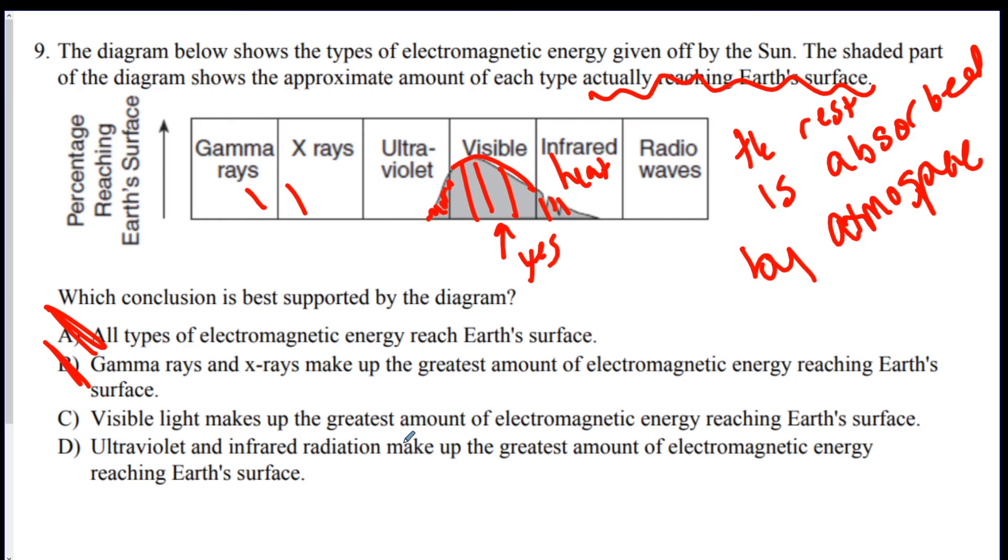Ultraviolet and infrared radiation make up the greatest amount? No. There's only a little bit here and a little bit here. So, that's wrong. So, the answer is C. So, I hope that was helpful. Stay tuned for the second part of the energy unit. Which will be coming up shortly, or you can just click on to the next video if it's already there. Alright? Good luck. See you on the next one.